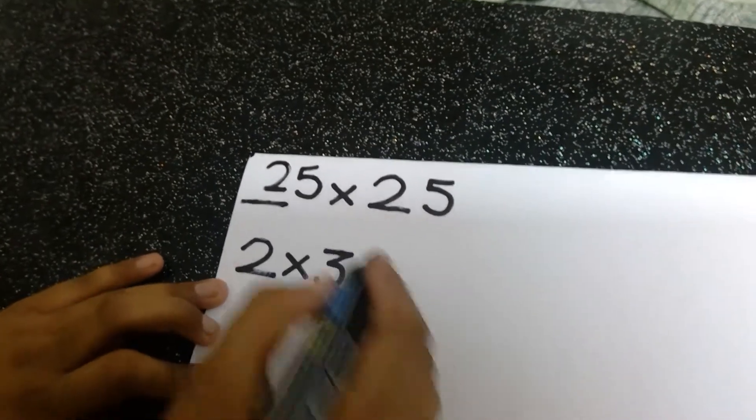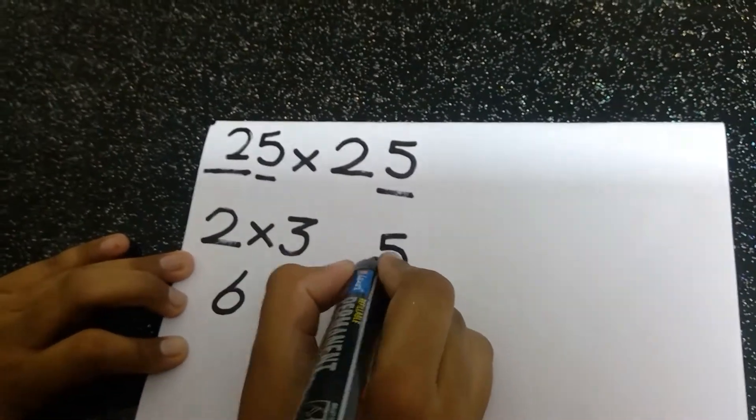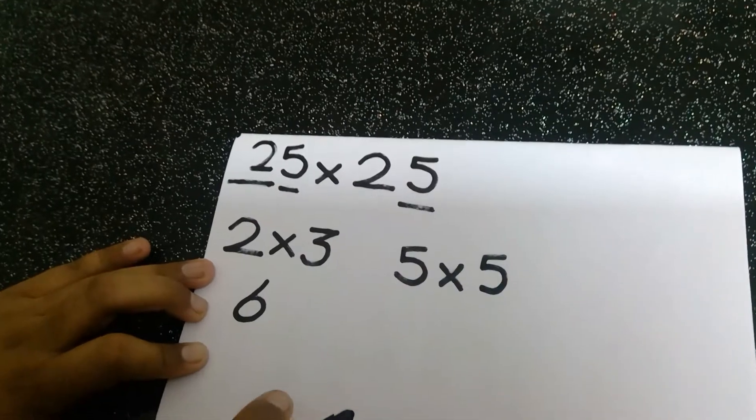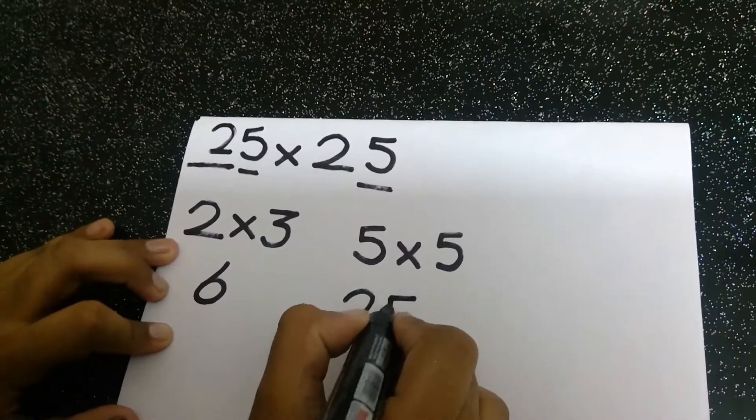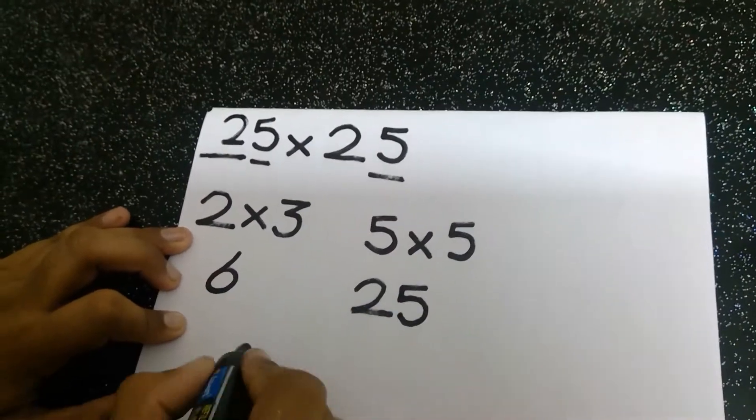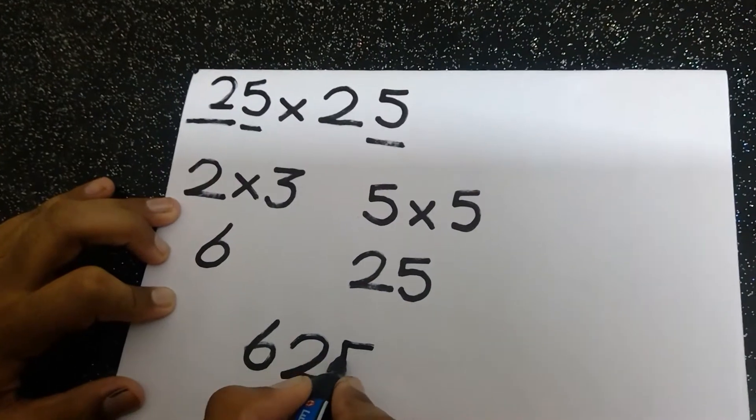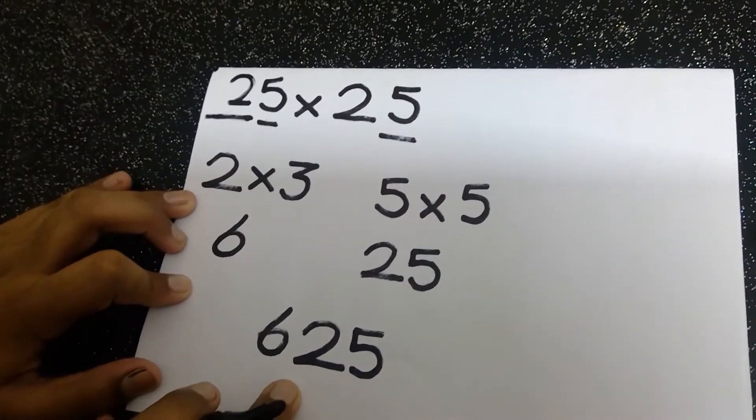Now we are going to multiply 5 and 5. So 5 into 5 equals 25. Our answer is 625. So 25 into 25 equals 625.